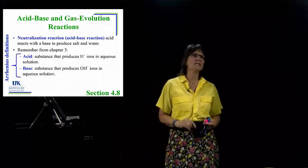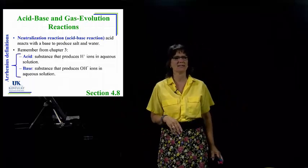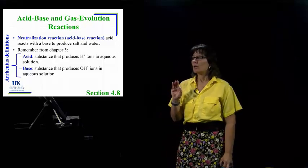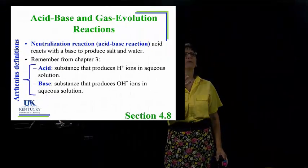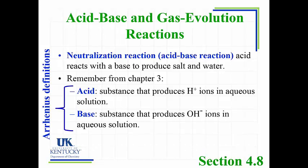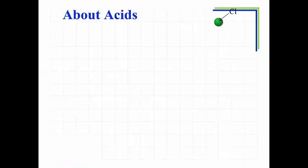This is the Arrhenius definition of an acid and a base. Acids and bases can be defined three common ways: the Arrhenius definition, the Brønsted-Lowry definition, and the Lewis definition. We won't focus on those other two definitions this semester — we'll hold off and talk about those much later. For now, the Arrhenius definition is how we'll define acids and bases.